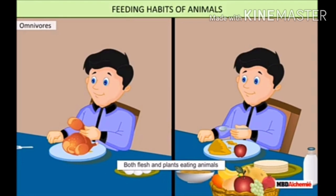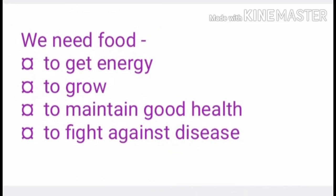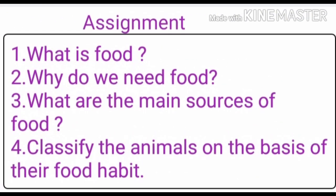The third group is omnivores — animals in this group eat both plant as well as animal products, for example human beings and crows. Now, why do we need food? Can we live without food? The answer is no. We need food for various purposes: to get energy, to grow, to maintain good health, and to fight against disease. Without food, we will not get energy to do work and our growth is also badly affected. That is why food is a necessary part of our life and we have to eat healthy food every day.